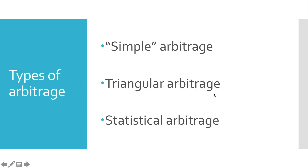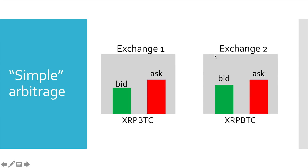Let's look at these methods in detail and begin with simple arbitrage. Let's assume that we have accounts on two exchanges — exchange 1 and exchange 2. In real life these could be Binance, Bitfinex, Poloniex, Bittrex, and so on. Both of these exchanges have a common pair. For our example, let it be XRP against Bitcoin. Each exchange has its own order book, and on the top of this order book we have the highest bid price — the highest price traders are willing to pay for buying XRP — and the lowest ask price, which is the lowest price at which a trader wants to sell their XRP. Same for the second exchange.